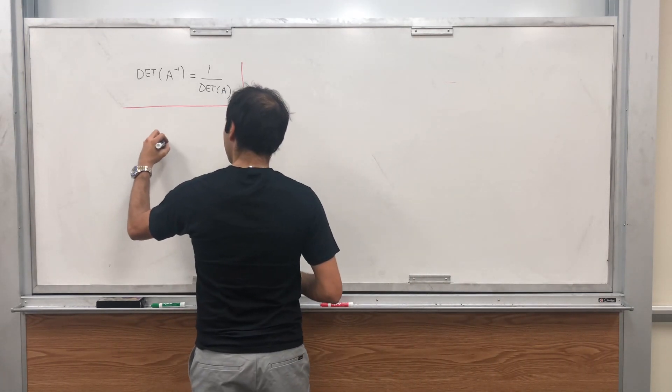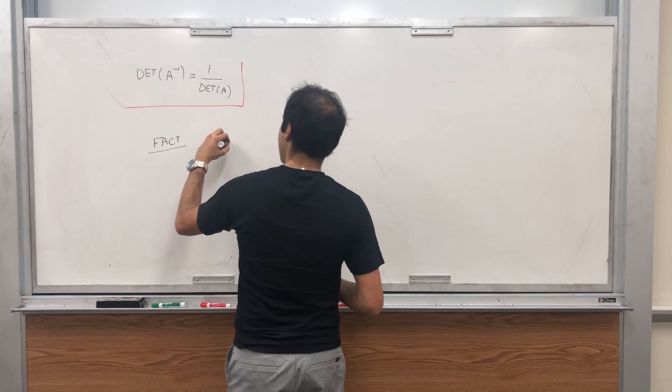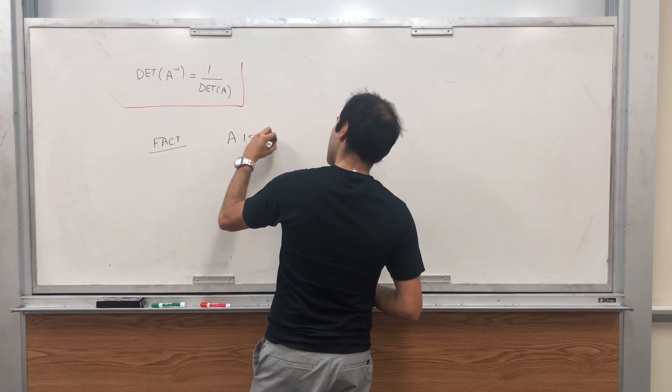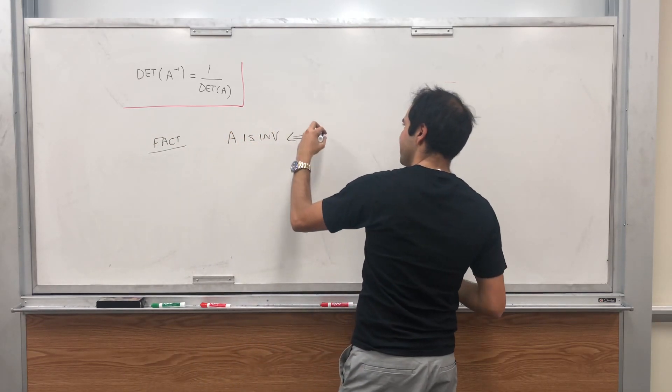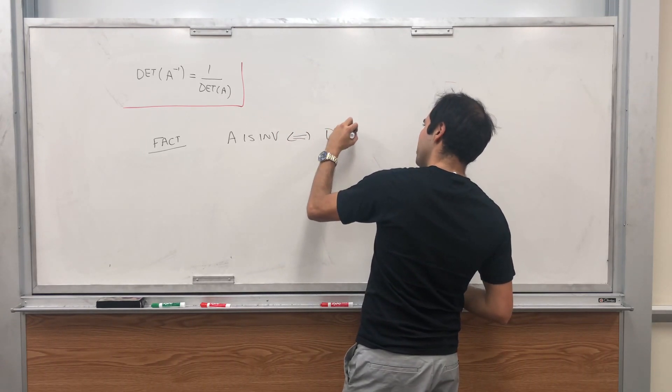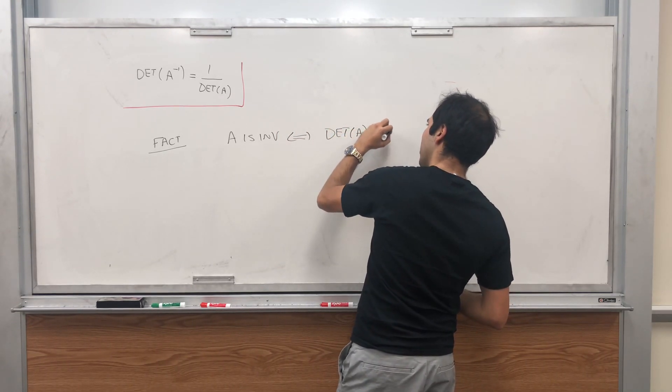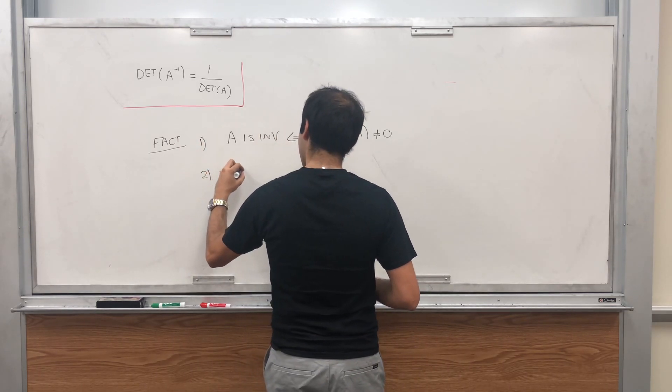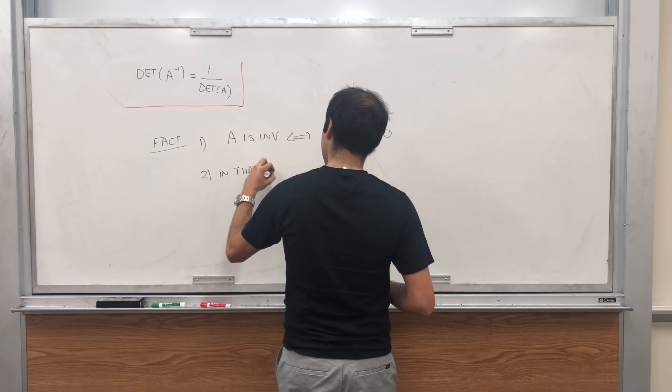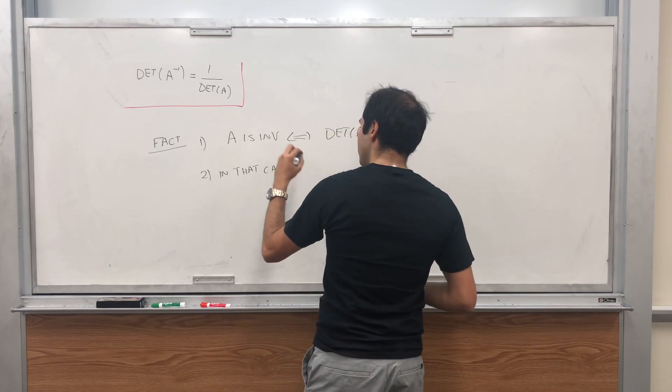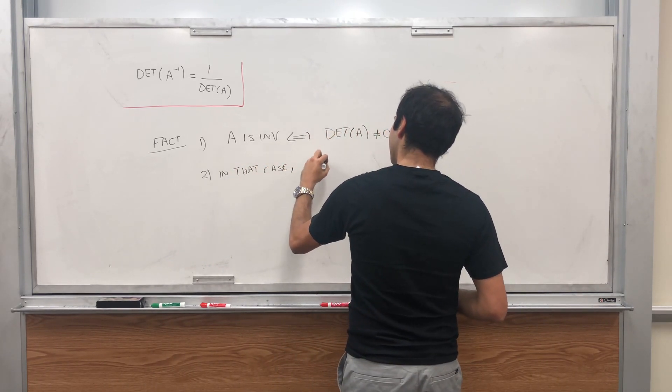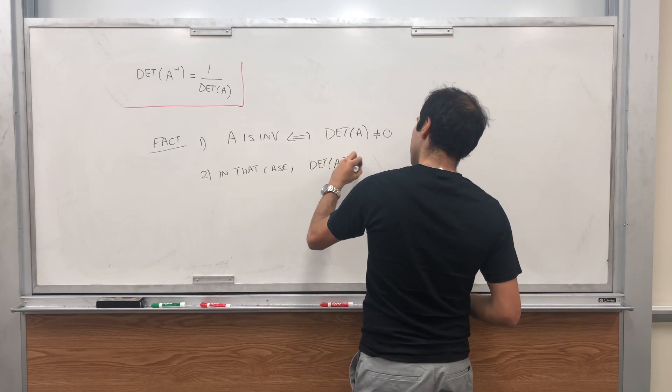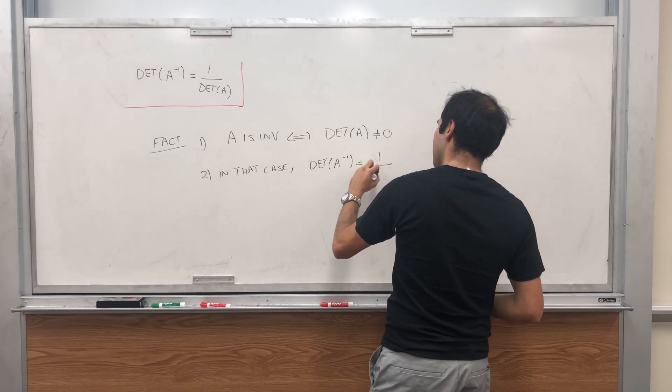In fact, again, A is invertible, again square matrices, if and only if the determinant of A is non-zero, and in that case, the determinant of A inverse equals 1 over the determinant of A.